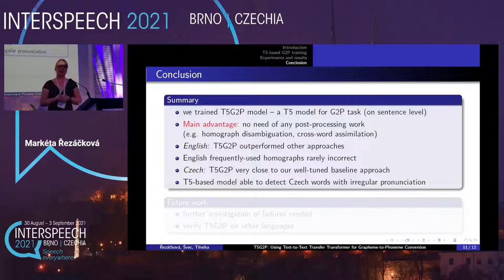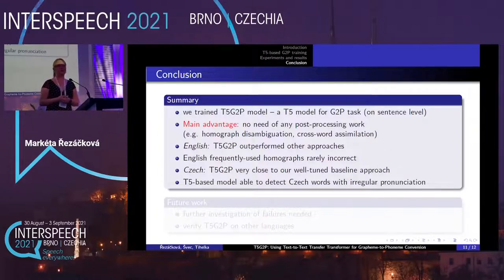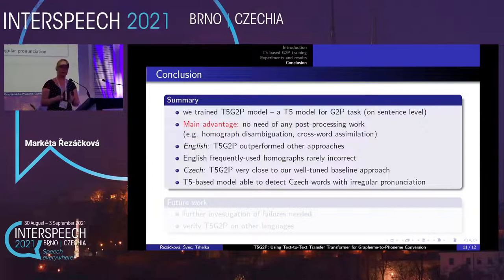To sum up, we trained the T5G2P model for G2P tasks working at sentence level using T5 architecture. The main advantage is that there is no need for post-processing work such as homograph disambiguation or crossword assimilation in Czech, because the model handles these itself. For English, T5G2P outperformed other approaches and is rarely incorrect for frequently used homographs. For Czech, it was very close to our well-tuned baseline, and we also proved that the T5-based model can detect Czech words with irregular pronunciation.